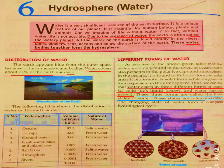Our topic now is distribution of water. As we have already discussed, 71% of our earth's surface is covered with water, and because of this, earth appears blue from outer space — this is why it is called the blue planet.